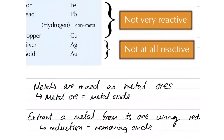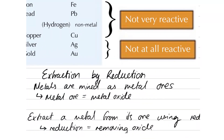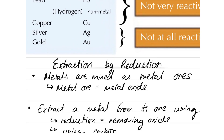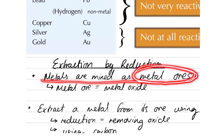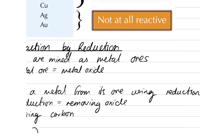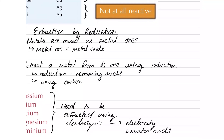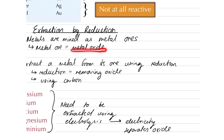Now, we're going to look at extraction of metals by something we call reduction. Metals are mined from the ground — they come from the ground and they are mined as metal ores. What is a metal ore? A metal ore is simply a metal oxide.